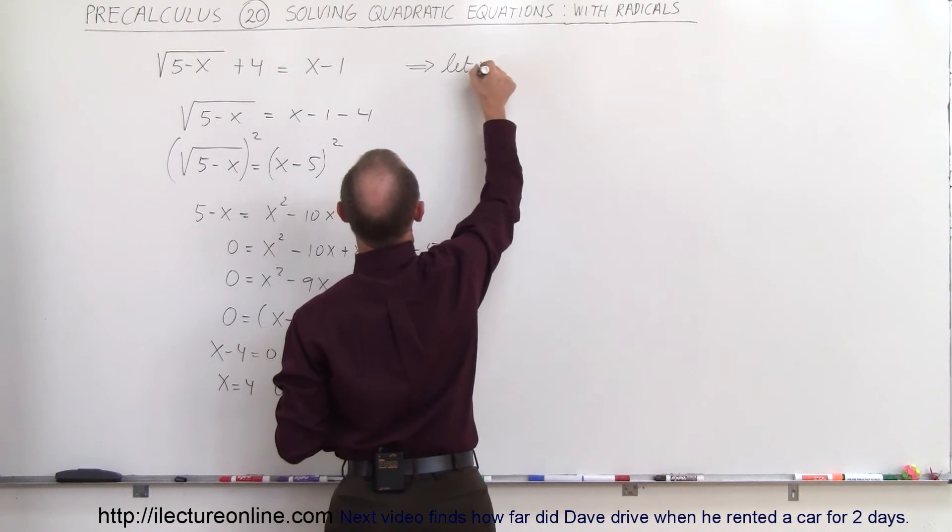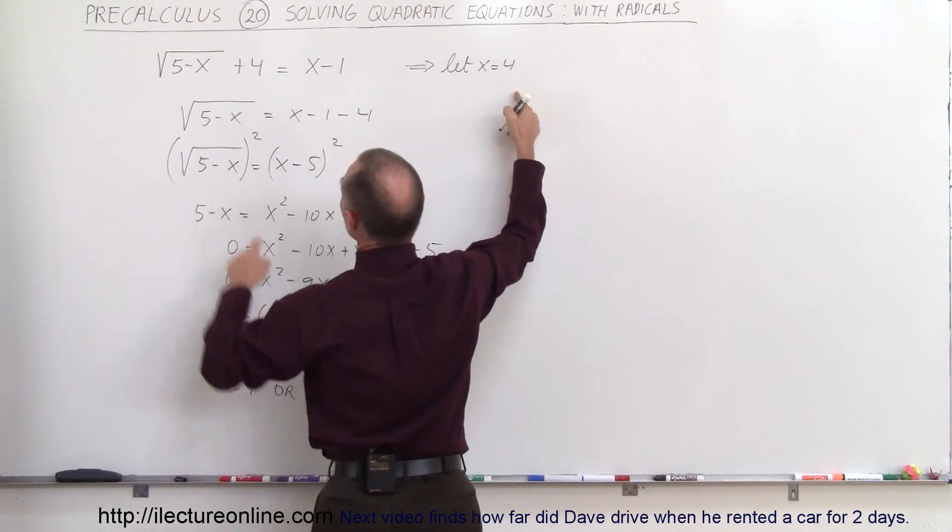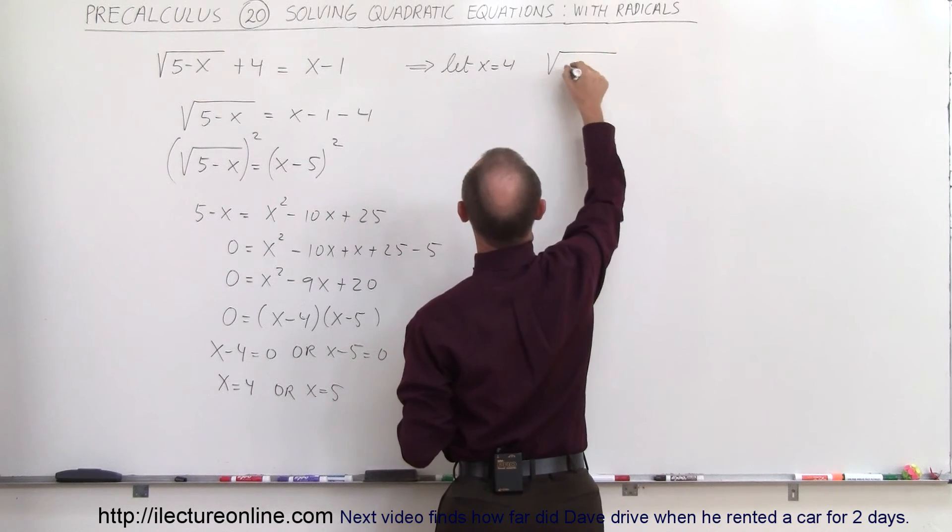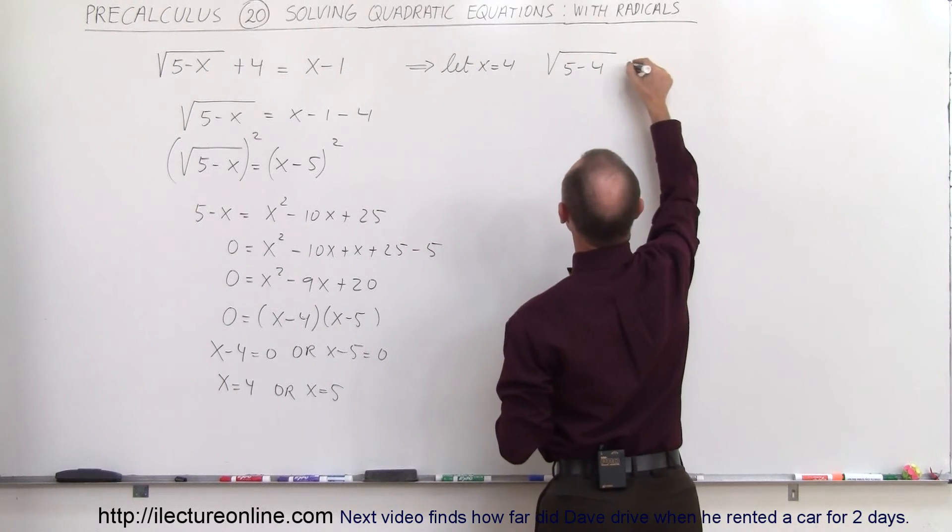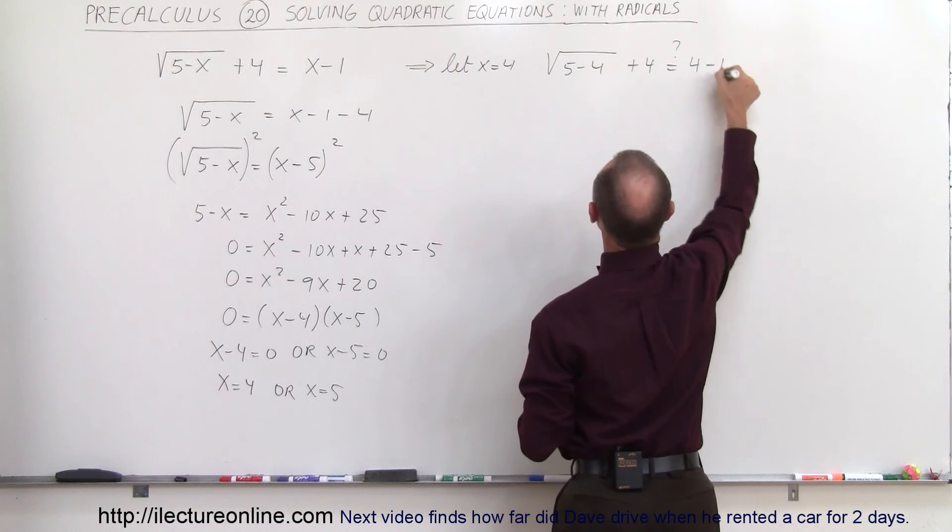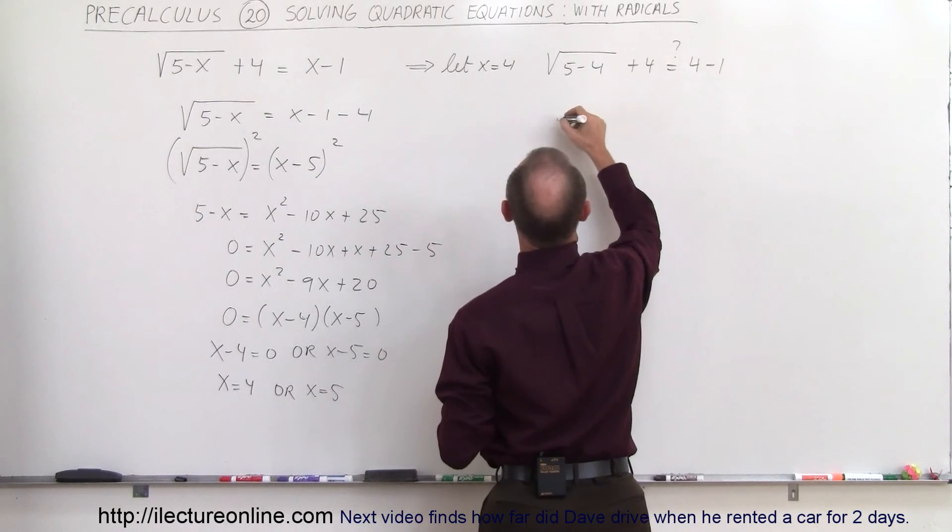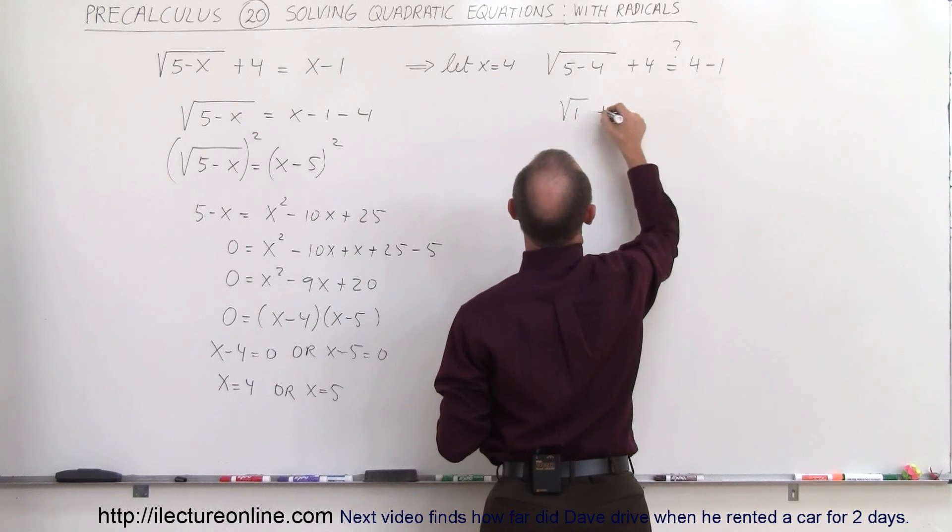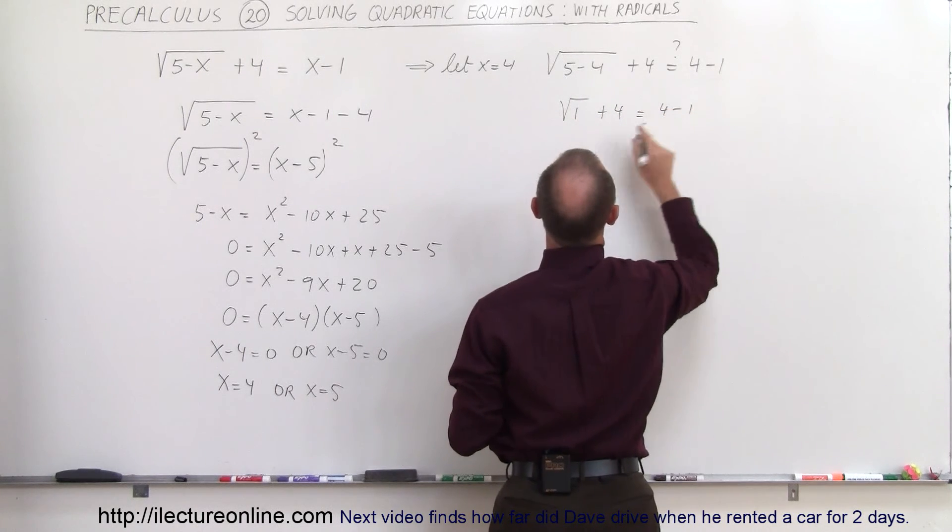So let x equals 4 and let's plug that in there. So we have the square root of 5 minus 4 plus 4, is that equal to, question mark, 4 minus 1. And so this gives us the square root of 1 plus 4 equals 4 minus 1.